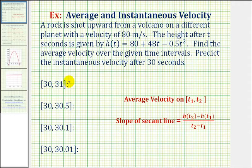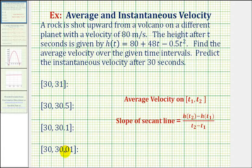The average velocity over the given intervals will be the slope of the secant lines passing through the two endpoints of each interval. And the instantaneous velocity will be the slope of the tangent line at t equals 30. Notice how the two points are getting closer and closer together approaching t equals 30, so we can use these average velocities to make a prediction about the instantaneous velocity.